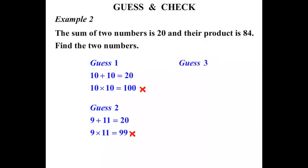Our third guess now. Two numbers add to give 20. What about 8 and 12? 8 plus 12 equals 20. Now their product is 84. 8 times 12, that's the product of these numbers, and 8 times 12 is 96. 96 compared to 84, we're getting closer but still not quite right.